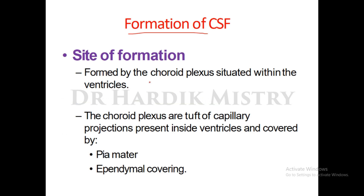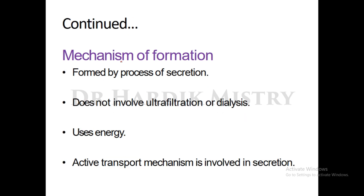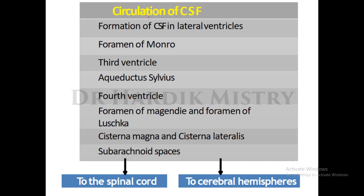CSF is formed by the choroid plexus, which is situated within the ventricles. The choroid plexus consists of tuft-like capillary projections present inside the ventricles and covered by pia mater and ependymal coverings. Mechanism of formation: it is formed by the process of secretion — it does not involve ultrafiltration or dialysis. It is an energy-dependent process involving active transport.